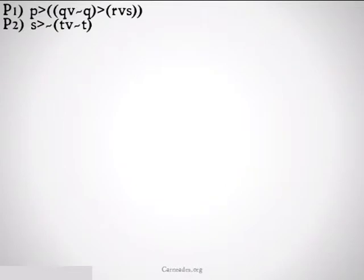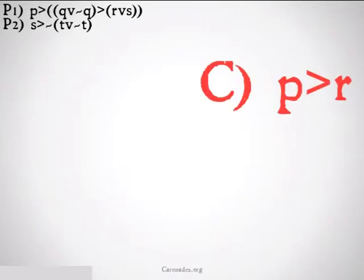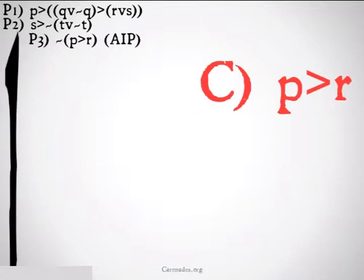Finally, we have the final problem of propositional logic. Premise 1: P implies Q or not Q implies R or S. Premise 2: S implies it's not the case that T or not T. We want to conclude P implies R. This is a problem that can be done with conditional proof, but we're going to focus on indirect proof here and see if we can do it just with indirect proof. So we assume the opposite: it's not the case that P implies R, assumed indirect proof, and draw our line going down.